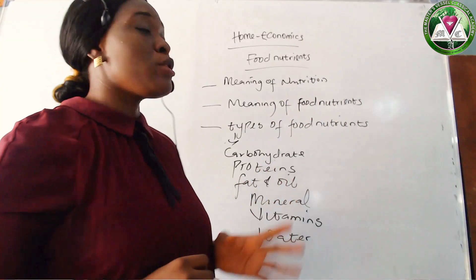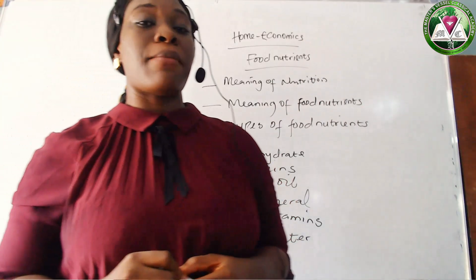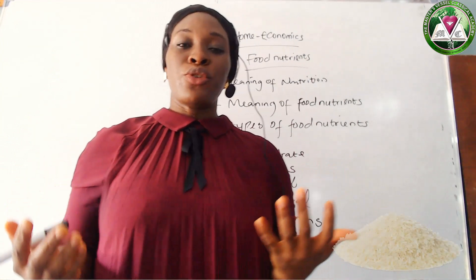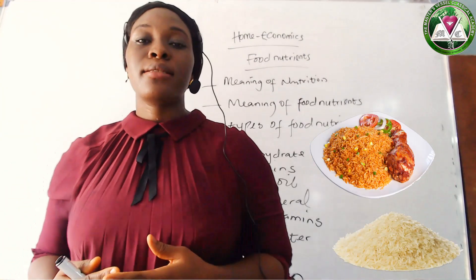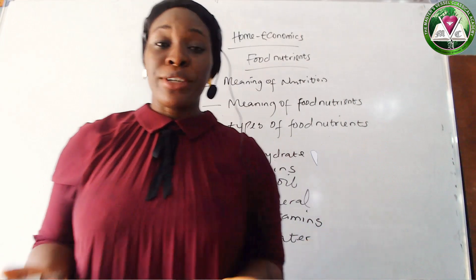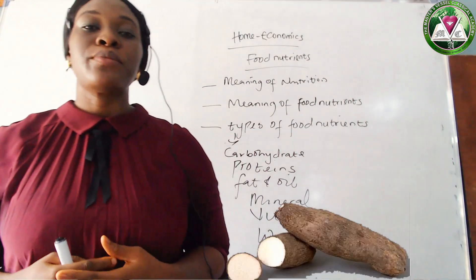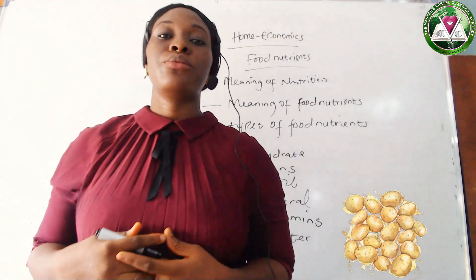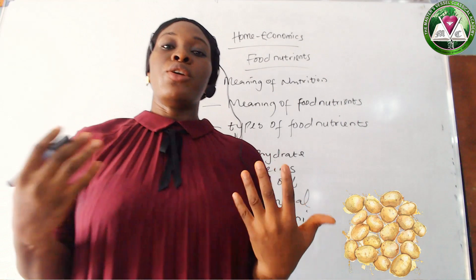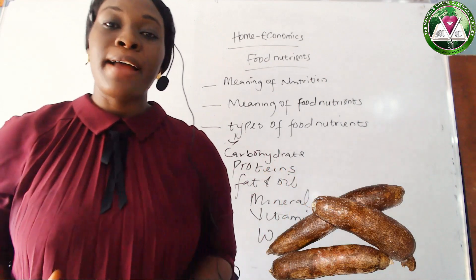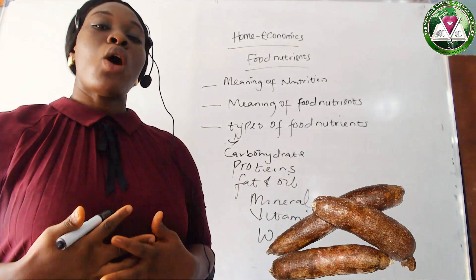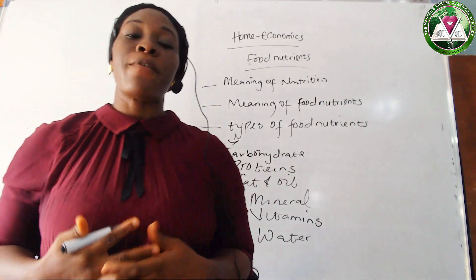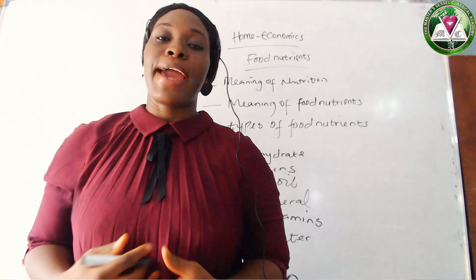What are the food sources of carbohydrates? We have number one, your rice, your yam, your potato, your cassava. All these are the food sources of carbohydrates.